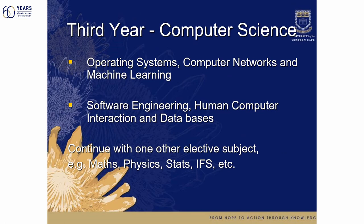In your third year you continue with computer science — for example, operating systems, computer networks, and machine learning, where we're starting to take you into the fourth industrial revolution technologies. You also do software engineering, human-computer interaction, and databases, and you continue with one other elective. So in your third year you'll have two subjects: computer science and, say, mathematics, physics, statistics, or information systems.